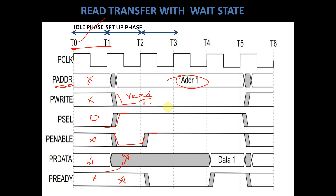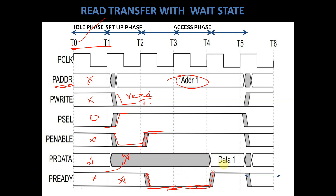During the access phase, PEnable gets asserted, which means transfer can be initiated. But PReady is still low in the access phase T2 to T3, so no transfer will take place from APB interface to the bridge. The bridge will wait from clock cycle T2 to T4 for the PReady signal to get asserted. As soon as PReady is asserted to 1, we are getting data on the read data bus, and this data is being transferred to the bridge from the APB interface. This is the read transfer with wait state.